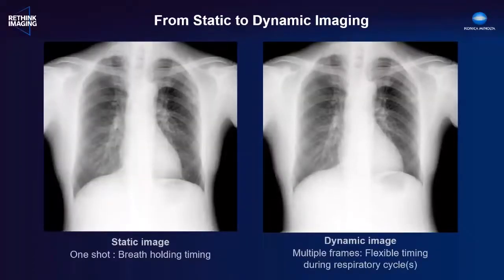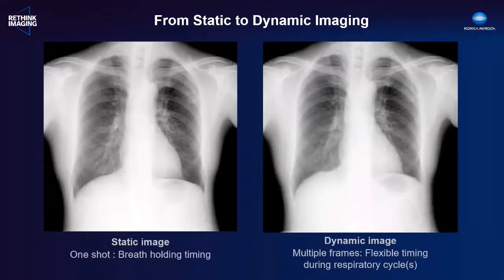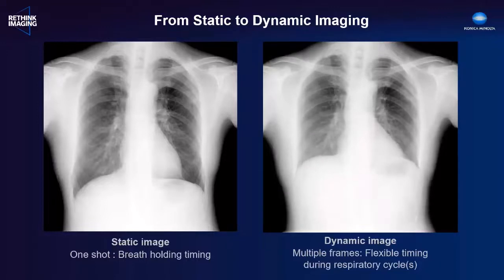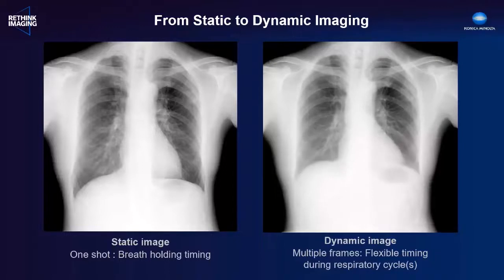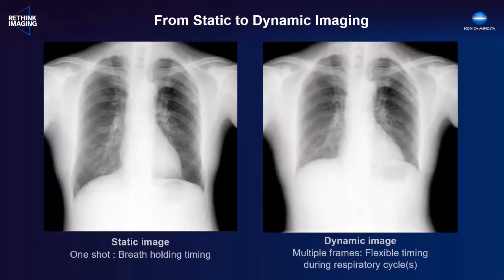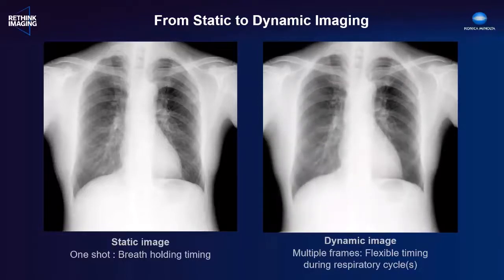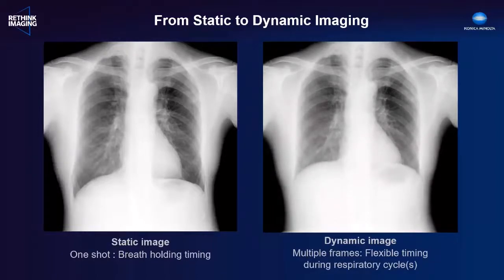For over 125 years, radiography has meant acquiring a static image of a patient's anatomy. Technologies were developed to enable capture of patient motion, but these entailed the use of specialized equipment, often requiring moving the patient to the imaging equipment itself. With the advent of fast readout, highly efficient digital detectors, we're now capable of acquiring dynamic imaging, capturing patient motion with the same equipment and in the same way one would acquire conventional static images. This enables us to observe anatomic and physiologic changes as they occur and offers the potential for improving the quality and efficacy of patient care.